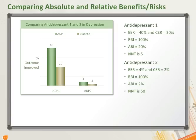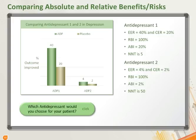However, the NNT shows that you would need to treat 50 people with ADP2 to get one additional person better. Which antidepressant would you choose? This is an important aspect, as relative benefits may be used to make one drug look better than the other, but it is the absolute benefits and NNT that help us in decision-making.